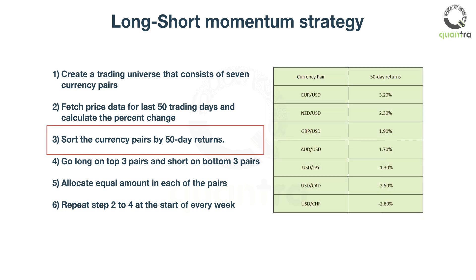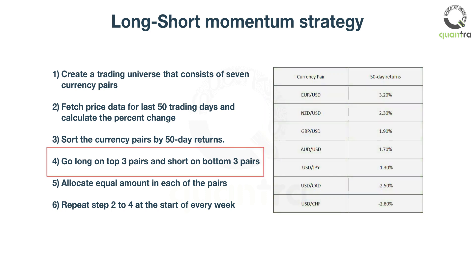Third, sort the currency pairs by 50-day returns. Fourth, go long on the top 3 pairs and short on the bottom 3 pairs.